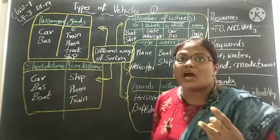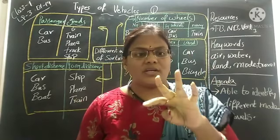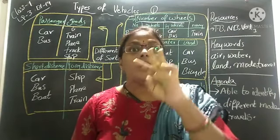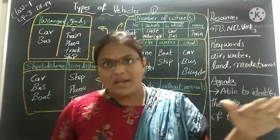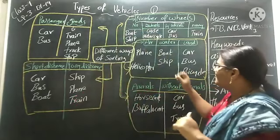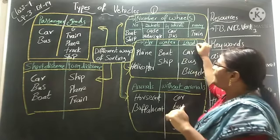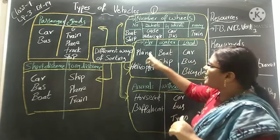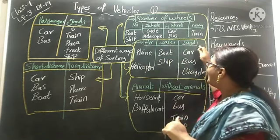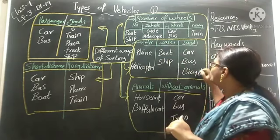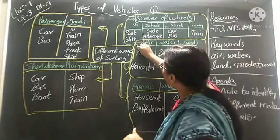Number two: we have learned in the previous class about mode of transport — three types. Depending upon mode of transport, we can also differentiate the vehicles. Air: plane, helicopter. Water: boat, ship. Land: car, bus, bike. This is the second way to sort out vehicles.